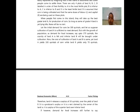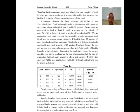Let the initial demand for corn be 100 quintals and cultivation of land A is sufficient to meet demand. But with the growth of population, as demand for food increases to say 170 quintals, the scarcity of land A is felt and inferior land B will be brought under cultivation. The cost of cultivation of land A and B is the same. Yet land A yields 100 quintals of corn while B yields only 70 quintals. Therefore, land A releases a surplus of 30 quintals over the yield of land B — a producer surplus or rent claimed by the owner of land A, being the surplus of superior land over inferior land.